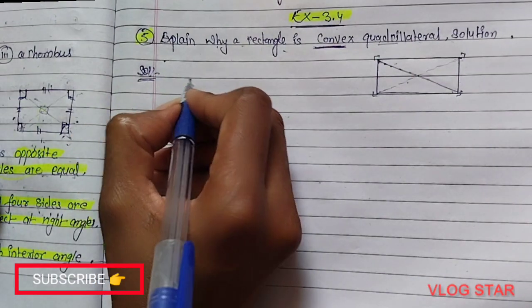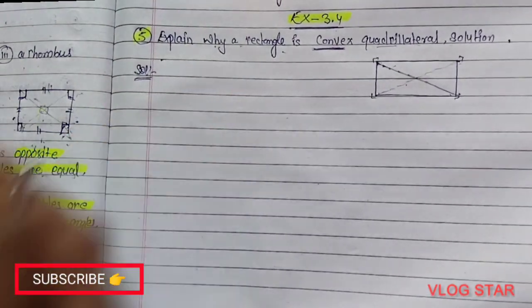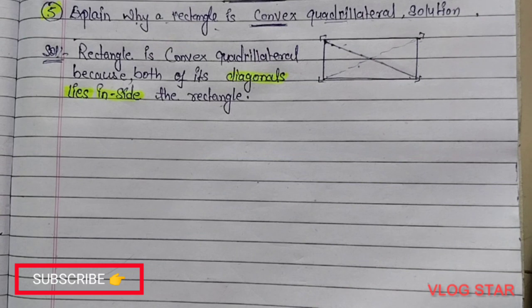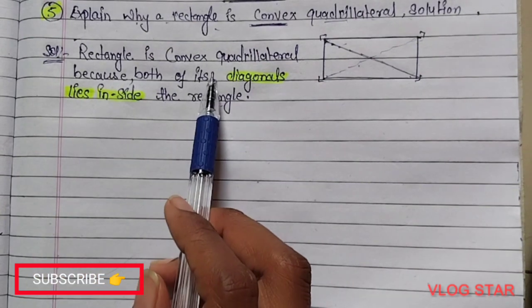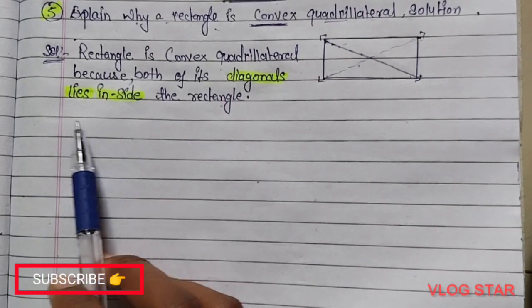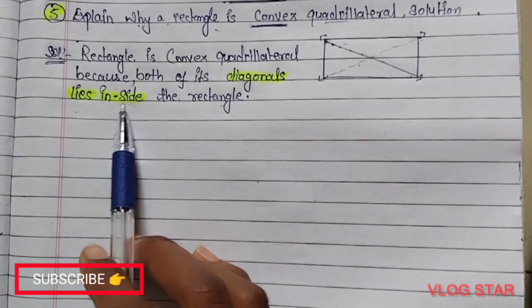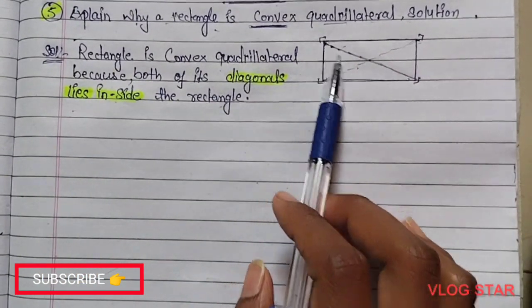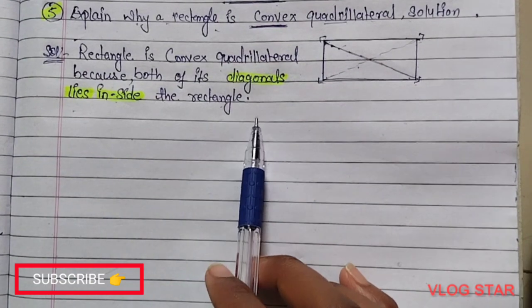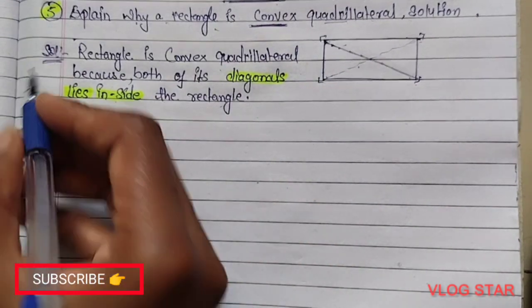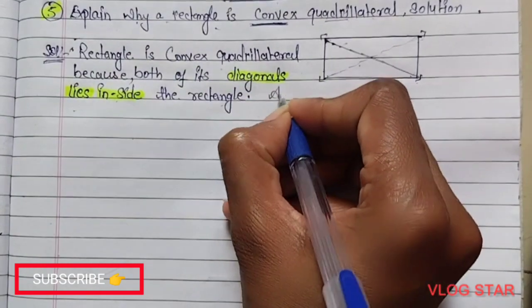You can write in the solution: Rectangle is a convex quadrilateral because both of its diagonals lie inside the rectangle. This is your one answer.